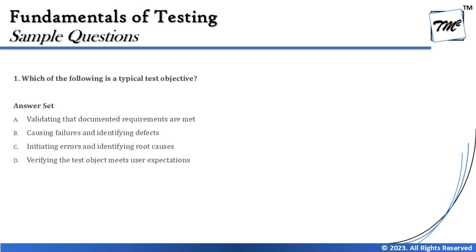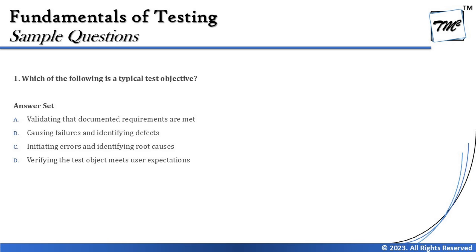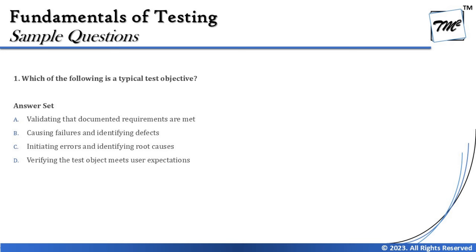Setting Option A aside for now, Option B says: causing failures and identifying defects. That is certainly one of our key objectives — when it comes to testing, it's primarily about dynamic testing. Our objective is to run test cases, cause as many failures as possible, and report defects so they can be corrected. Option C says: initiating errors and identifying root causes. Initiating error is the wrong keyword — as test engineers, we are not responsible for initiating errors, only for identifying failures and defects.